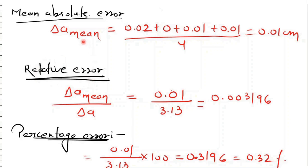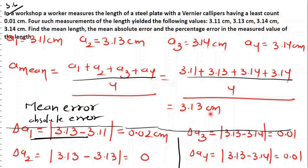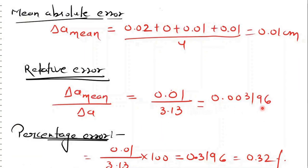Relative error is the ratio of mean absolute error to mean error. Mean absolute error is 0.01 and mean error is 3.13, so we divide them to get the relative error. For the percentage error, we multiply by 100, and we get 0.3196, which we can write as 0.32 percent.